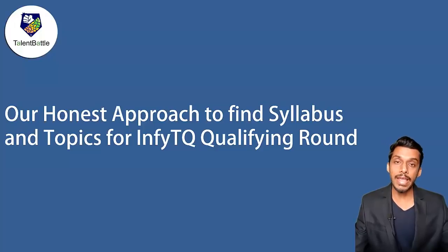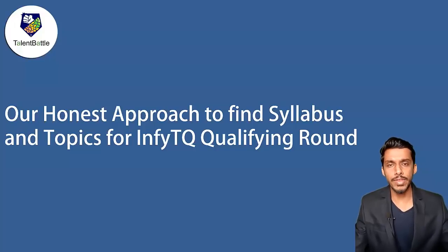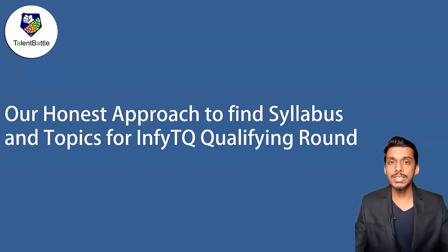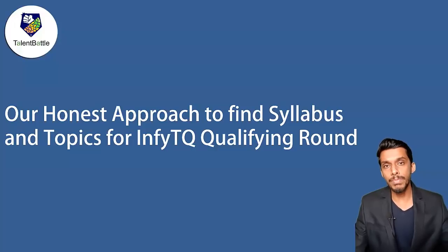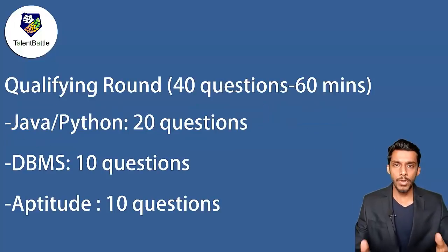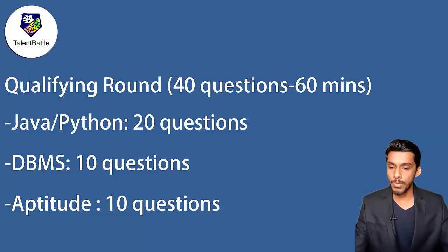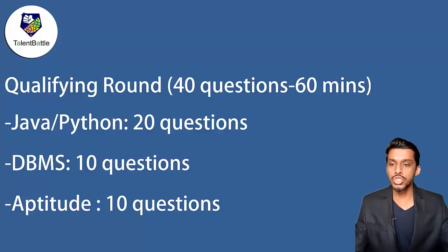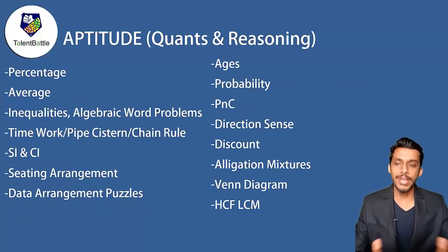There is a chance that some topics we haven't mentioned may appear in the exam since they weren't asked previously or in the sample test. With only about 15 days remaining for the exam, we wanted to give you at least one direction and some topics which have been previously asked. The exam pattern has a qualifying round of 40 questions in 60 minutes: Java or Python — 20 questions whichever language you opt for, DBMS — 10 questions, and aptitude — 10 questions.